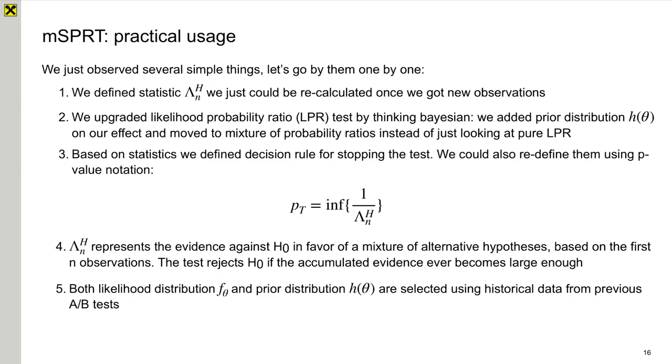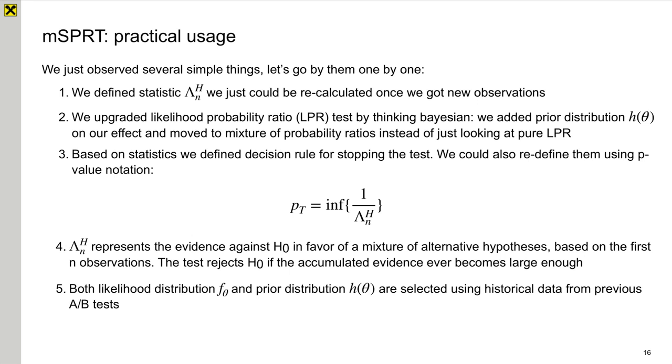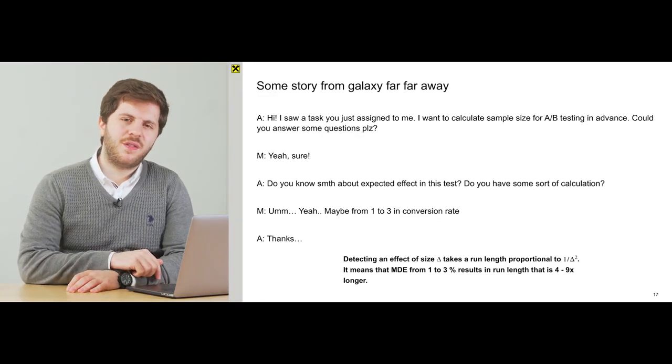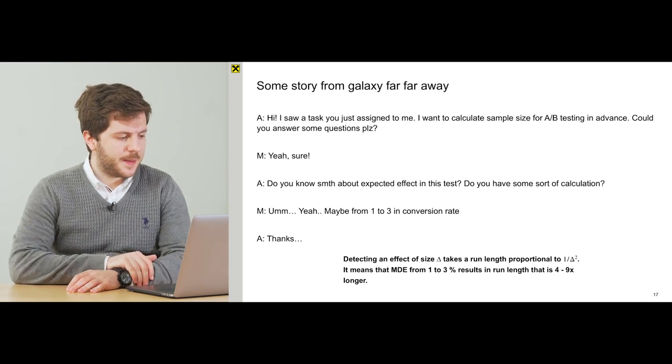And the last question you probably want to ask me is how to find likelihood function and prior distribution. And the answer is simple. You should use your historical data and find such distributions that fit your data best. And let's hear some story from galaxy far, far away. There is some analytic which works in a big company and his supervisor, let's call him manager.